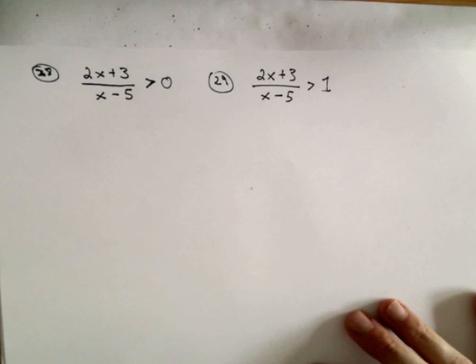So this one's set up kind of nicely. Again, we said for these rational inequalities, what you want is you want one side to be equal to 0.